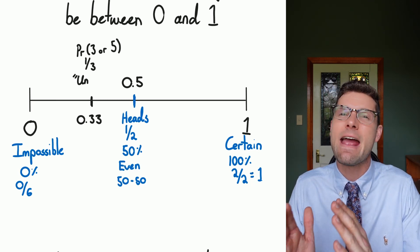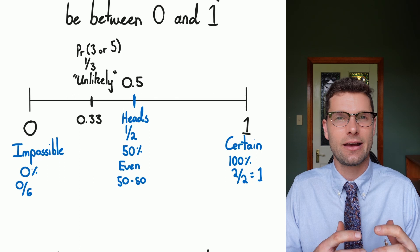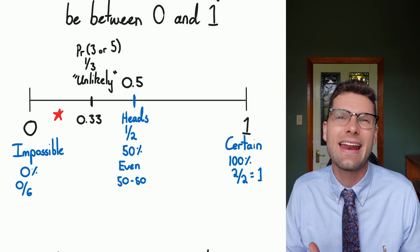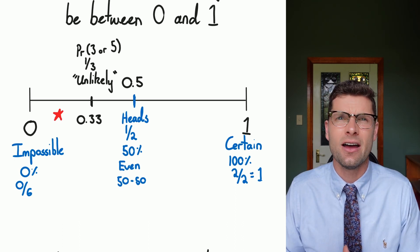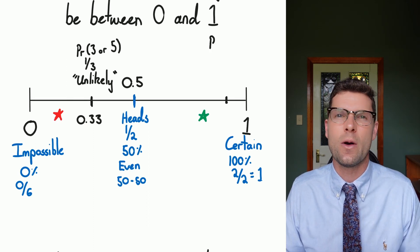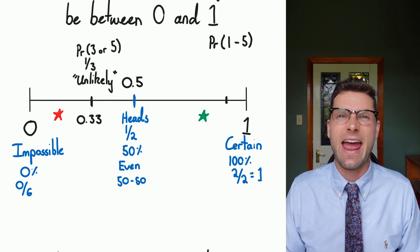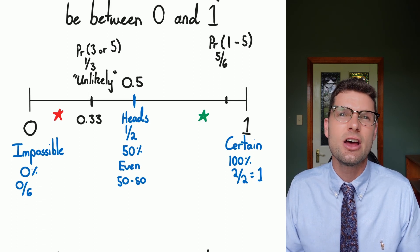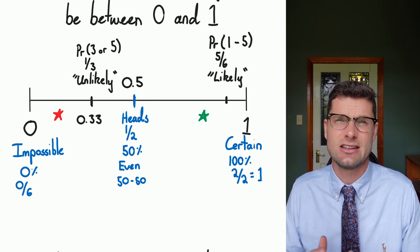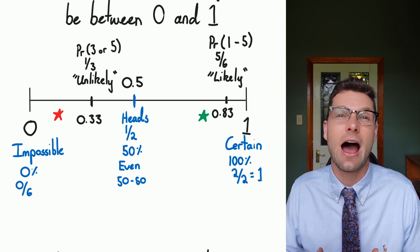One thing to think about is that everything on this side where I put the red star, everything over here is less likely to happen than 50% of the time. So we call this unlikely or not probable or anything like that. Whereas if we're on the other side, that is where things are likely to occur. So if I said, rolling one to five, you win, and if you roll a six, you lose, you would say that's a great deal. Because five out of the six outcomes will give you the win. So this is equal to 0.86, right up there, very close to this certain mark. So this is something where likely you would win.